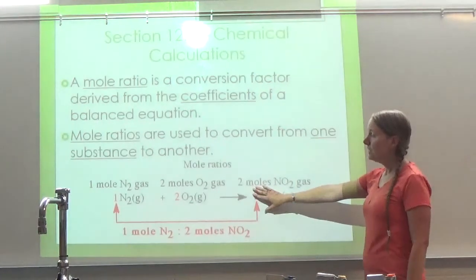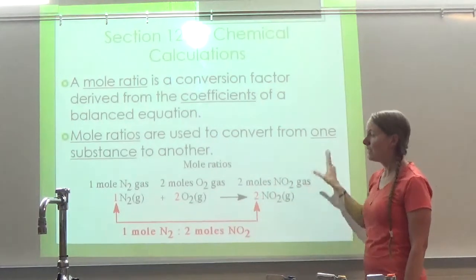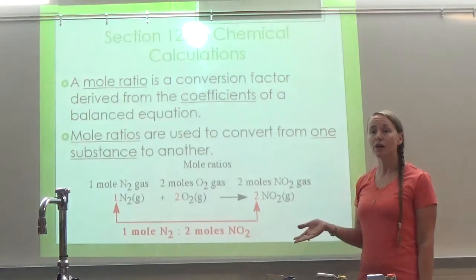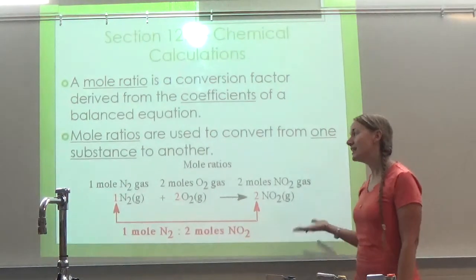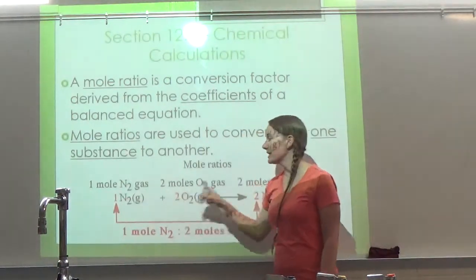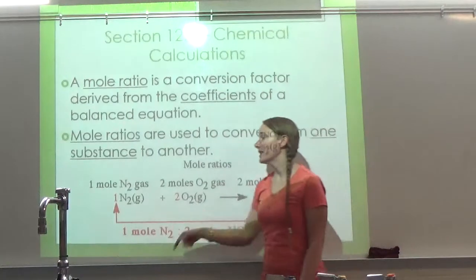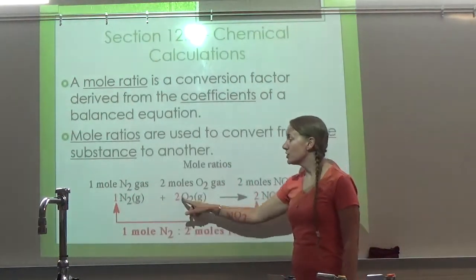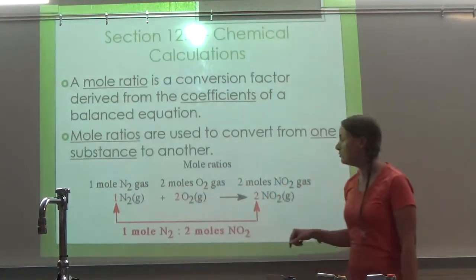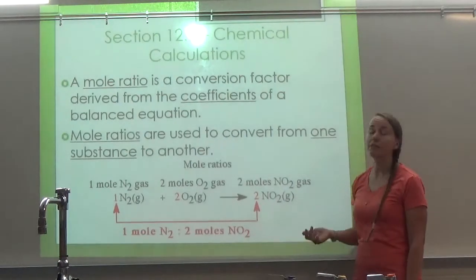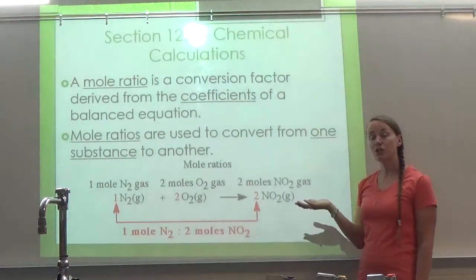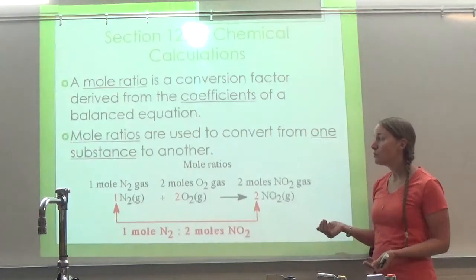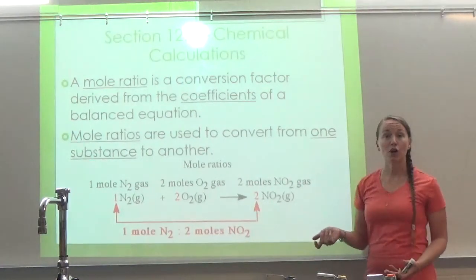So here we go. We have the balanced equation. Remember, I told you that from now on we want to think of the coefficients in terms of moles. So we want to think of one mole of N₂ plus two moles of O₂ will make two moles of NO₂. We want to think of it in terms of moles. Once you think of it in terms of moles, you can make what's called the mole ratio.